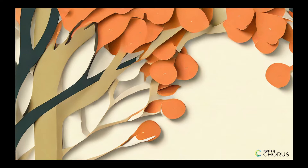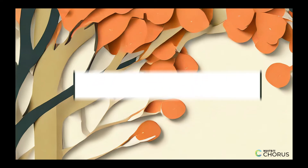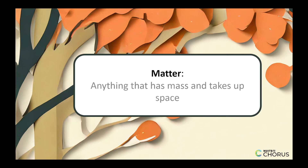Now, let's talk about the cycling of matter. Matter is anything that has mass and takes up space, like water, carbon, and nitrogen. In an ecosystem, matter is recycled continuously.